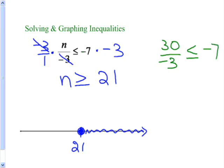Okay, so I'm just substituting a value that's bigger than 21 into my original equation. 30 divided by negative 3 is negative 10. And yes, that is less than negative 7. So I know that I've solved my inequality correctly.